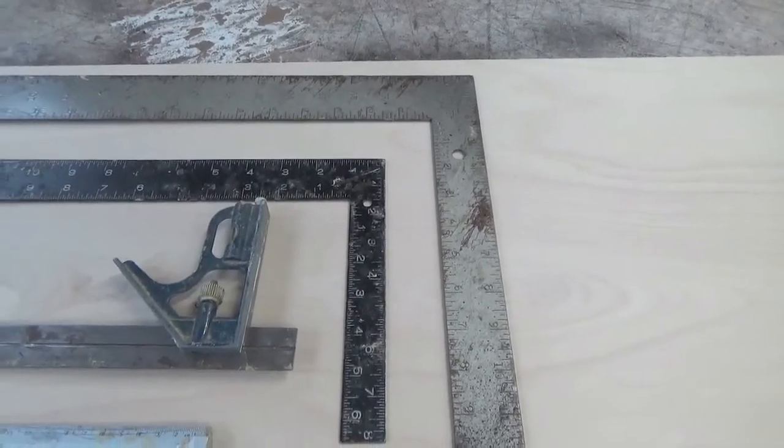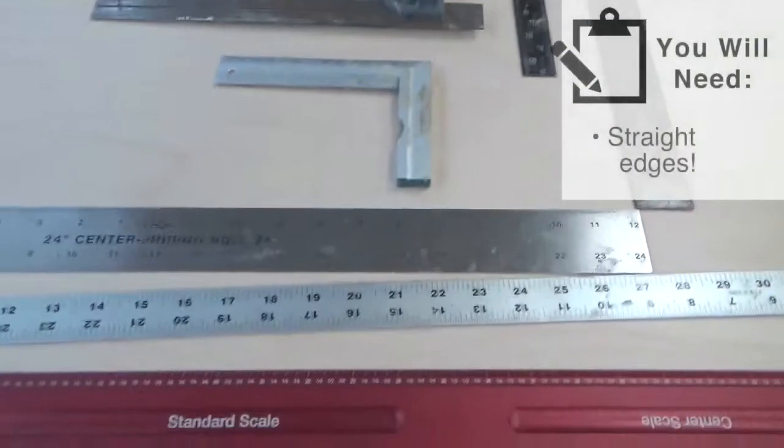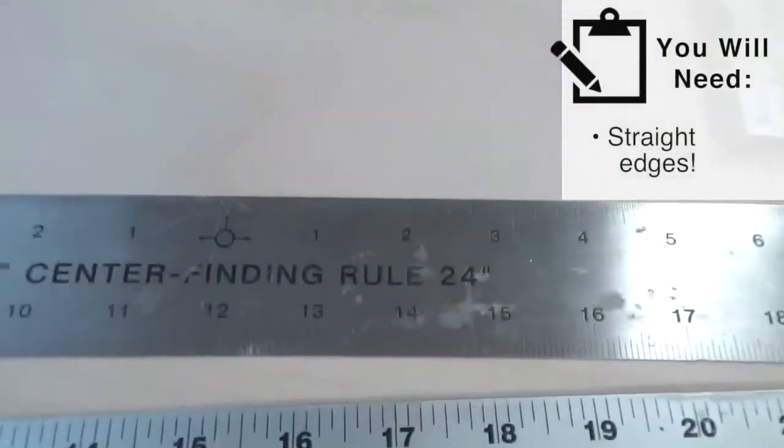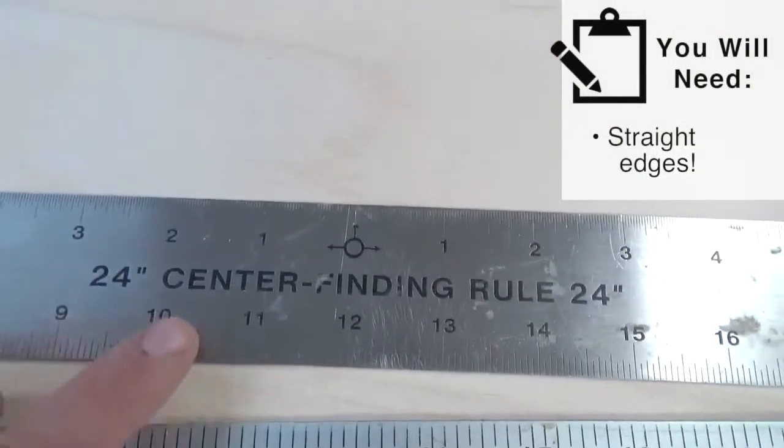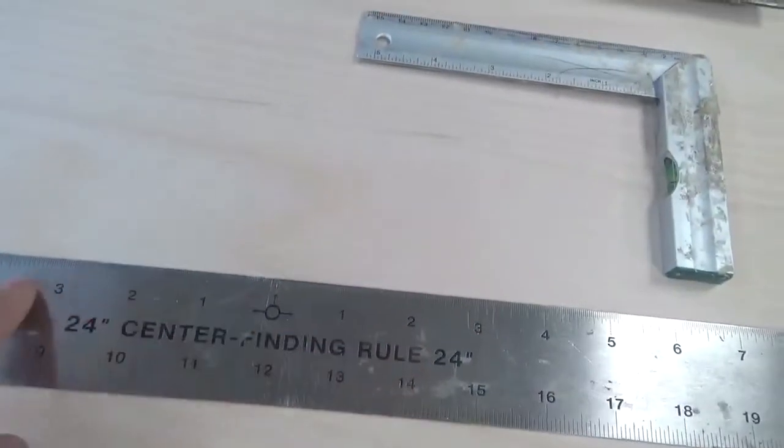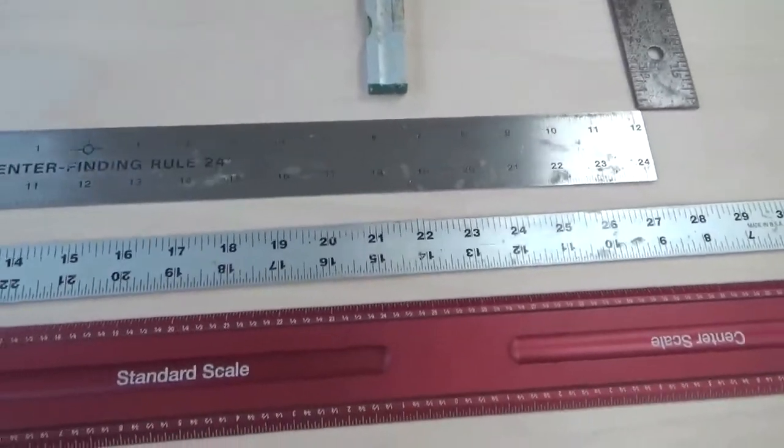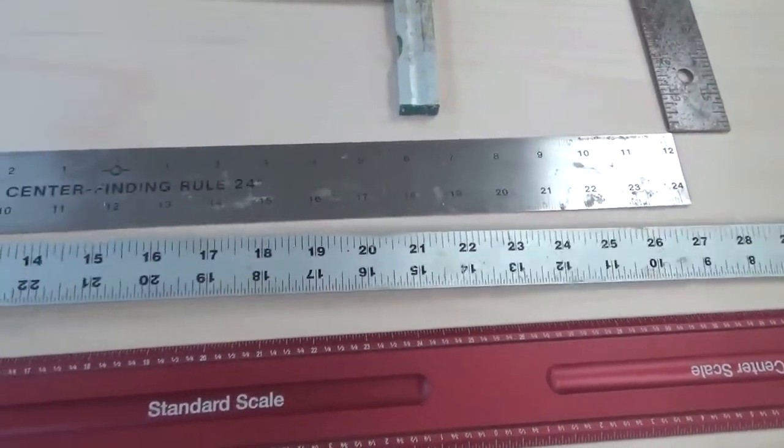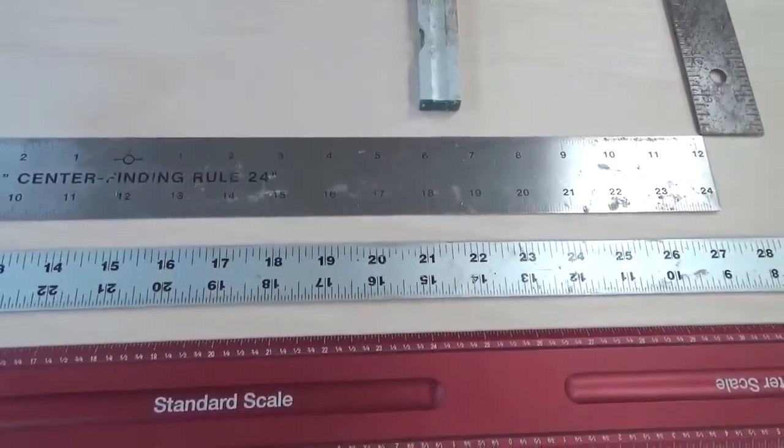We need straight edges. This one is really useful - this is a center finding rule. It's zero here and walks out from there, and that's really a useful tool on many cab layouts. You need a good straight edge - just a standard three-foot GP ruler works just fine.